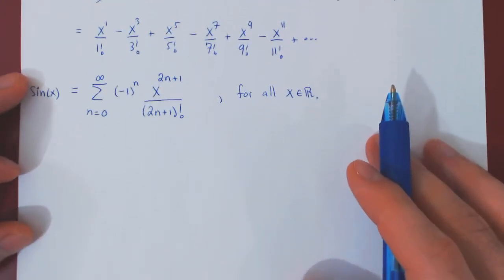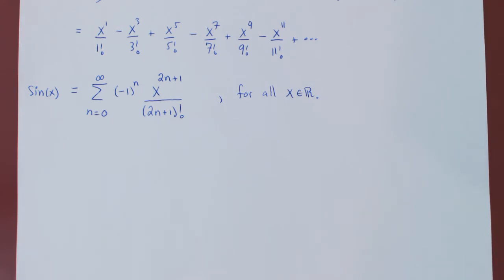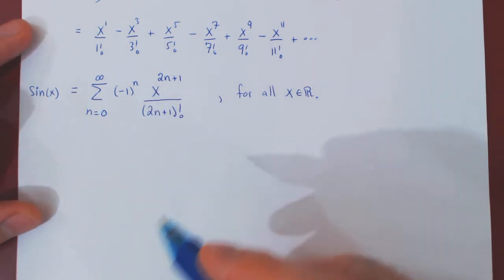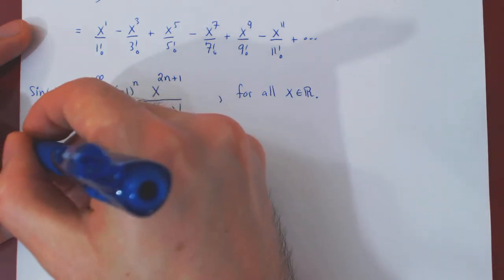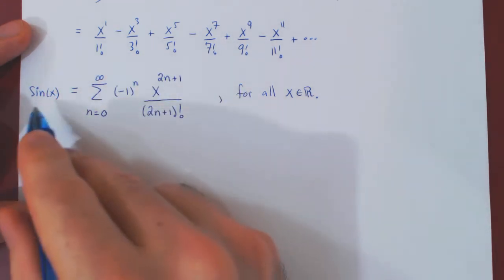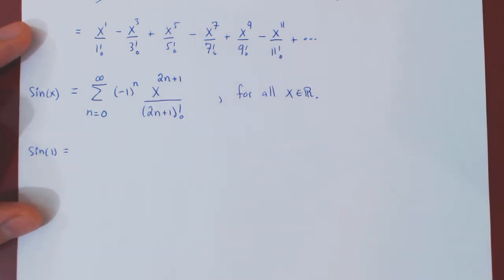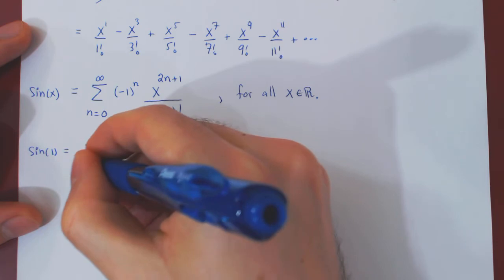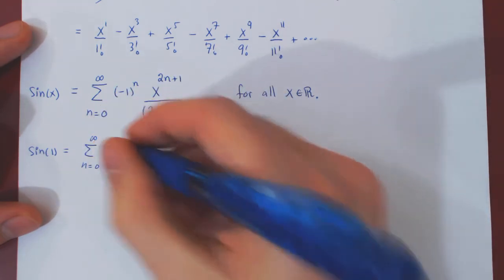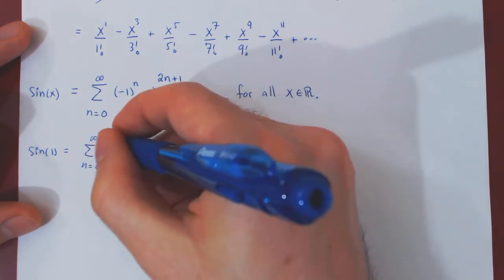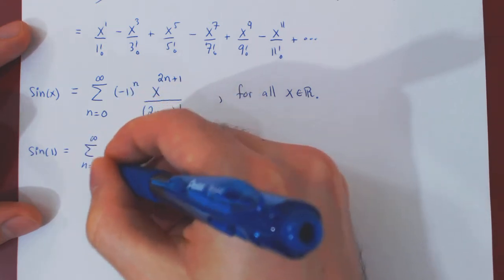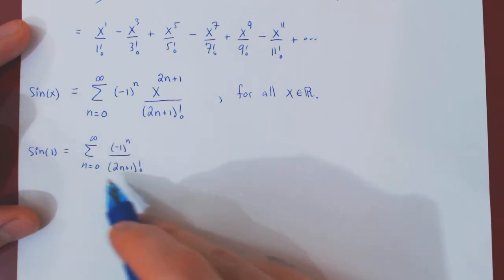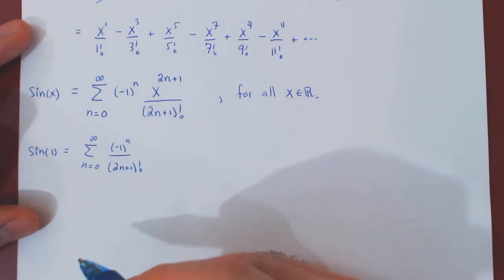As a nice application, we could evaluate sine of 1 — where 1 is in radians — by hand. Since the equality holds for all x, we can replace x by 1 to approximate sine of 1. To get an approximate value of any infinite series, it suffices to add the first few terms.